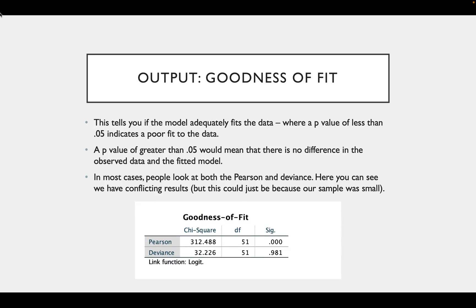The next box is the Goodness of Fit box. This tells you if the model adequately fits the data, where a p-value of less than 0.05 indicates a poor fit to the data and a p-value of greater than 0.05 means that there is no difference between the observed data and the fitted model.